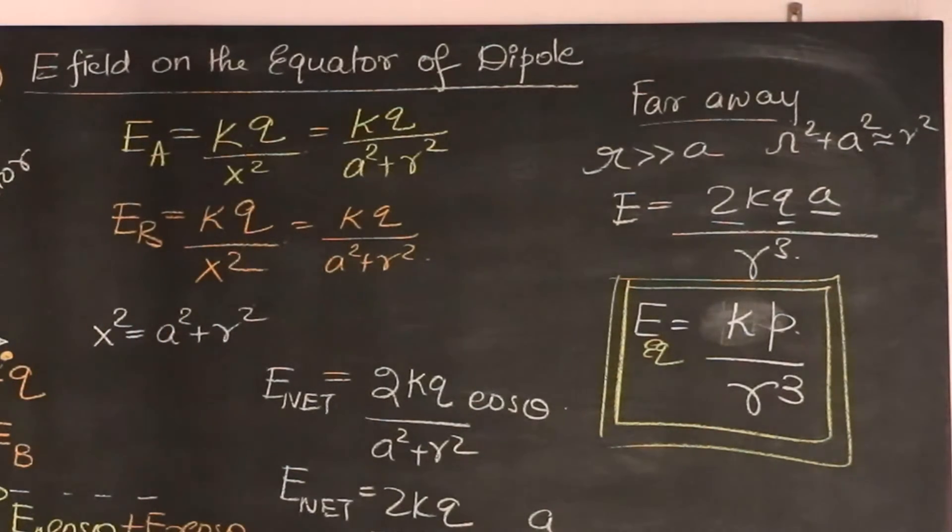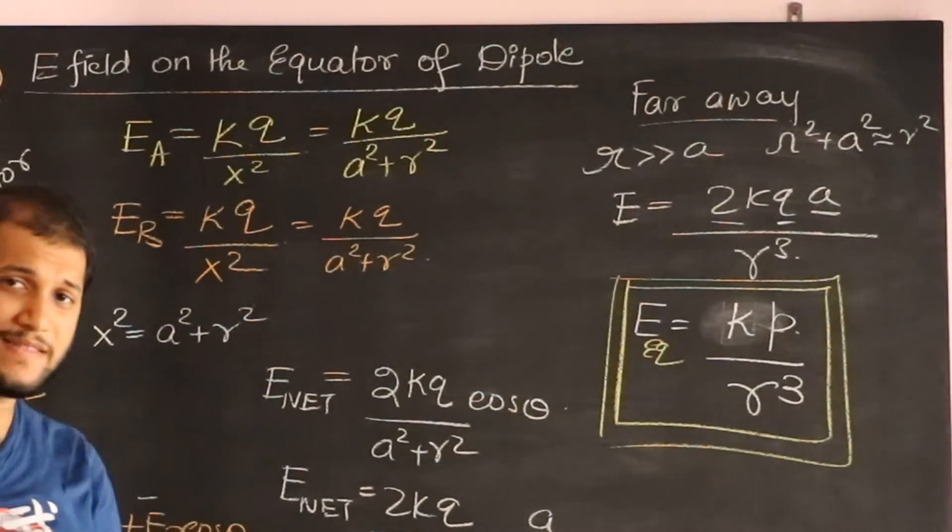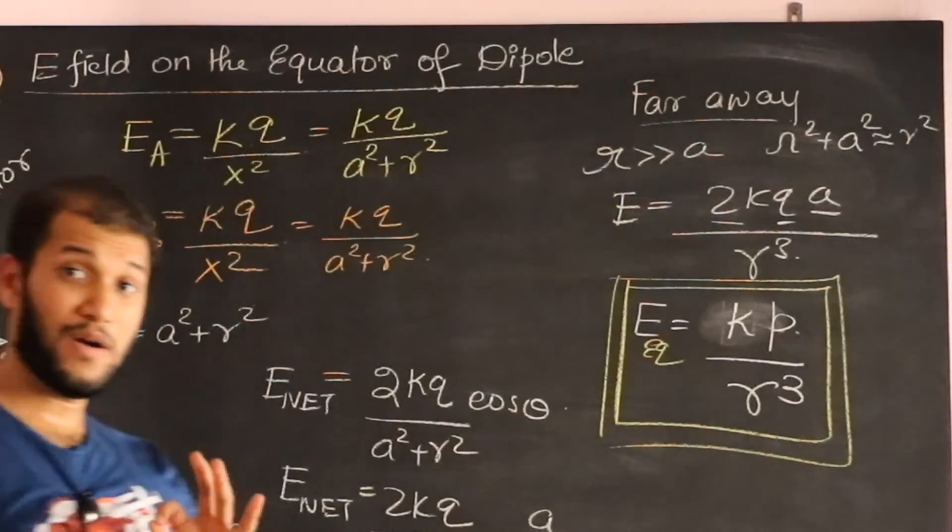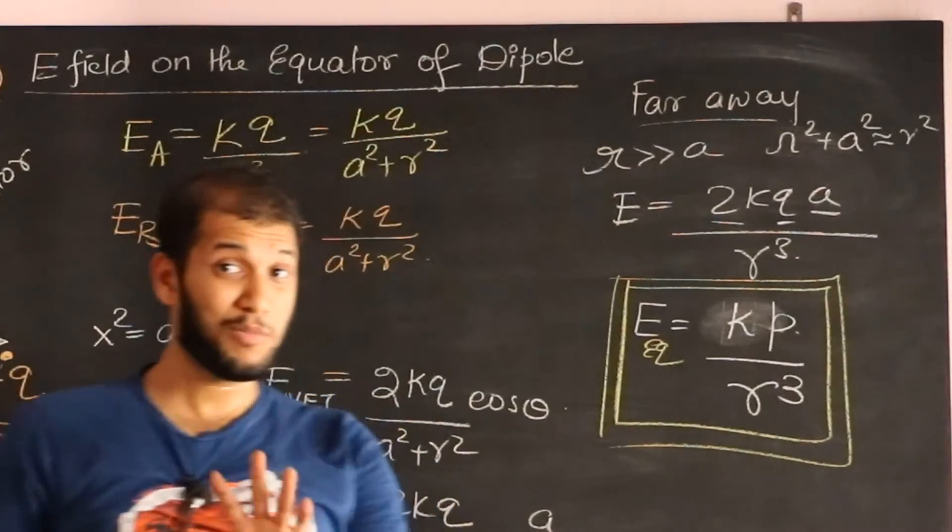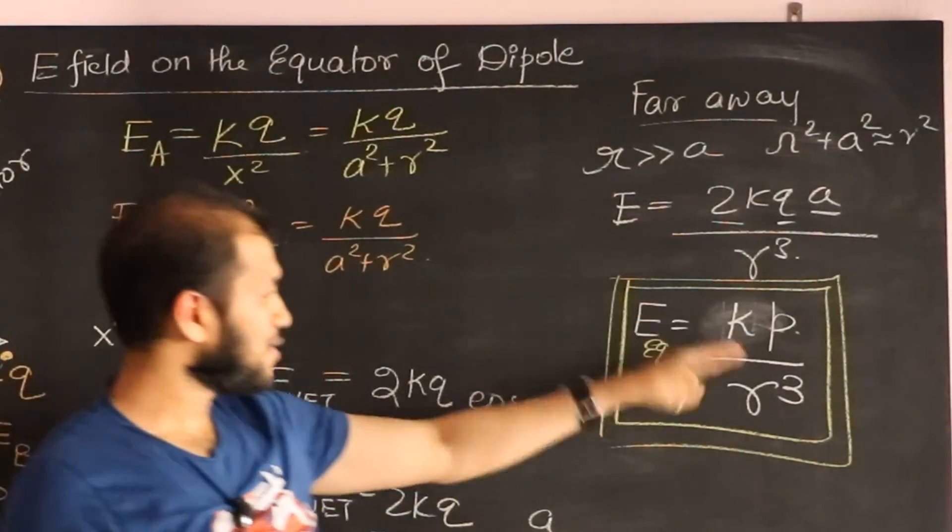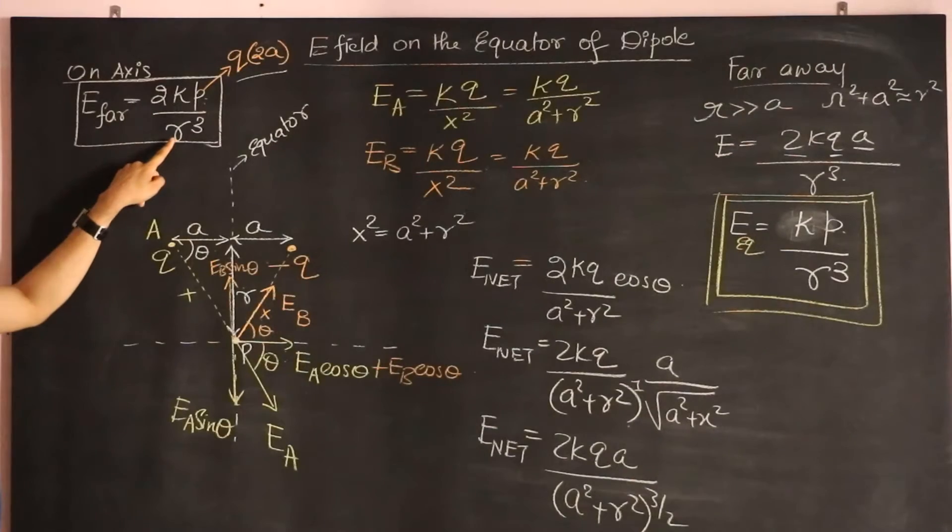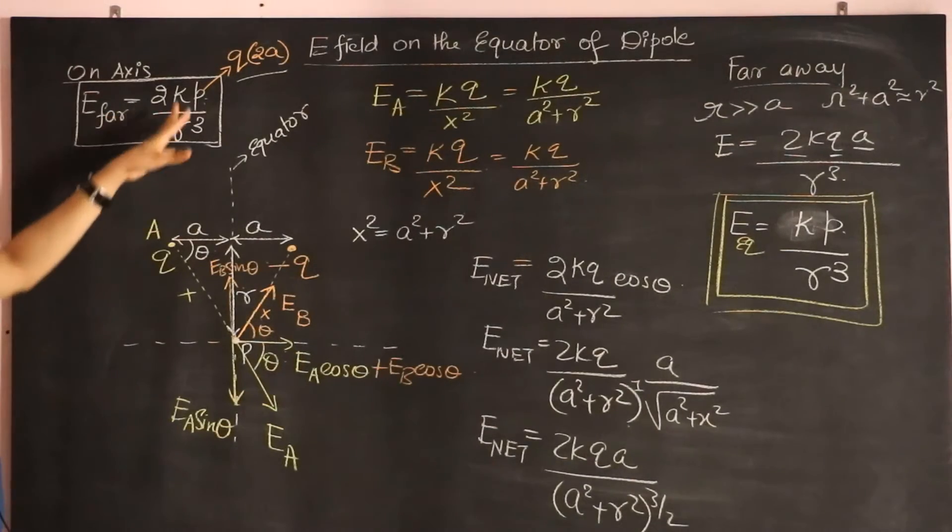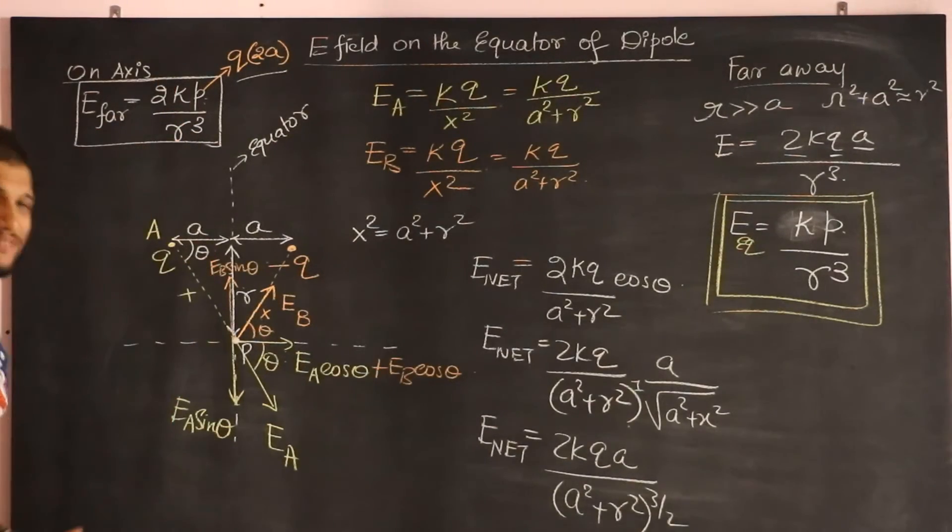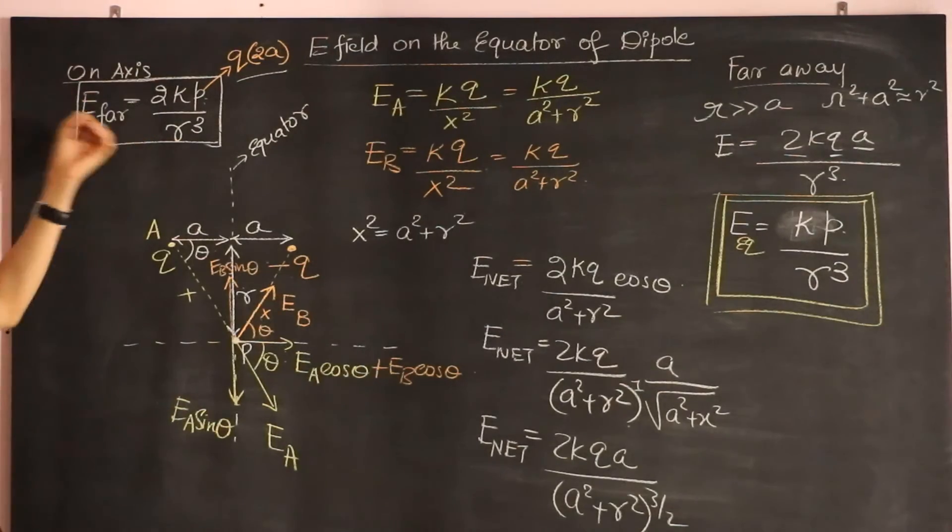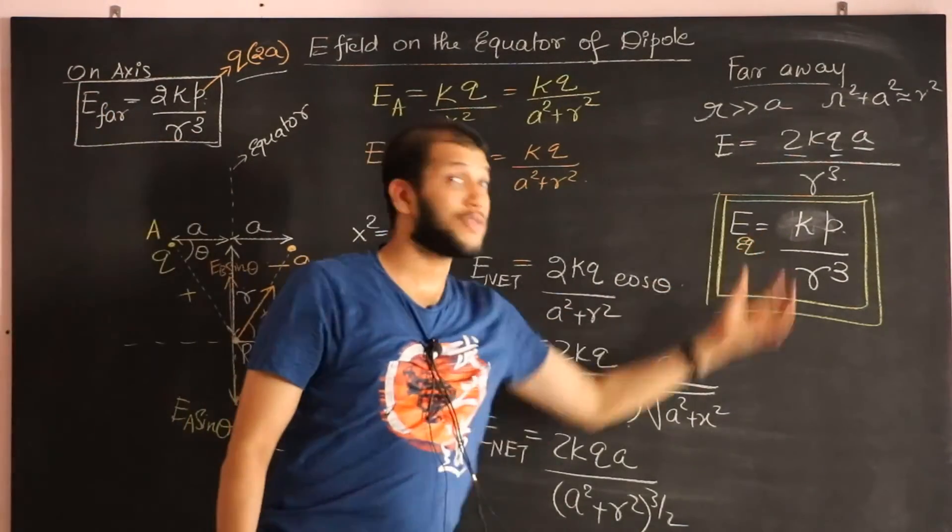So there's the expression for the electric field due to the dipole on the equator. And again notice, on the equator also the electric field purely depends only on the dipole moment—that's one. And second is also a 1 over R cube field, so you get exactly the same result, not exactly but pretty much the same result, except for one tiny fact: that on the axis the field is twice as strong as you get on the equator.